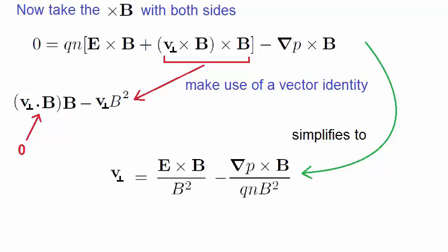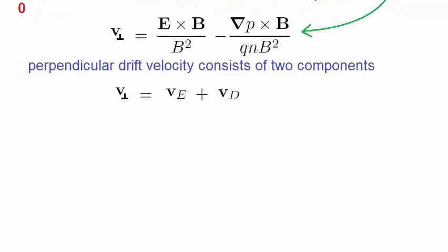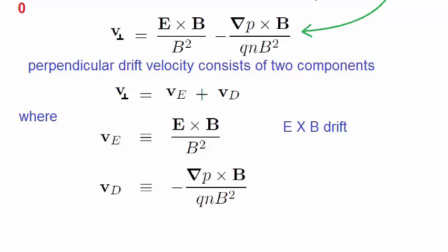We can say that the perpendicular drift velocity consists of two components, labelled here as V-e and V-d, where V-e is the E cross B term that we came across when we were looking at the single particle motion. However, this time, there is an additional term that we did not see in the single particle approach. We'll find out what this term means shortly. For the moment, we'll call it the diamagnetic drift term.